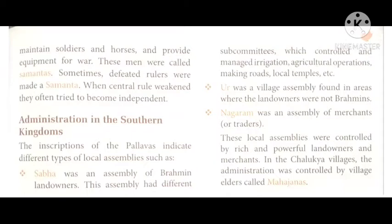These local assemblies were controlled by rich and powerful landowners (ameer aur shaktishali) and merchants (vyapari). In the Chalukya villages, the administration was controlled by village elders called Mahajan.